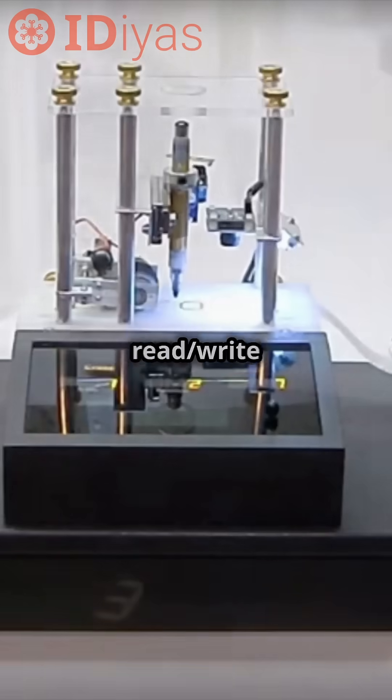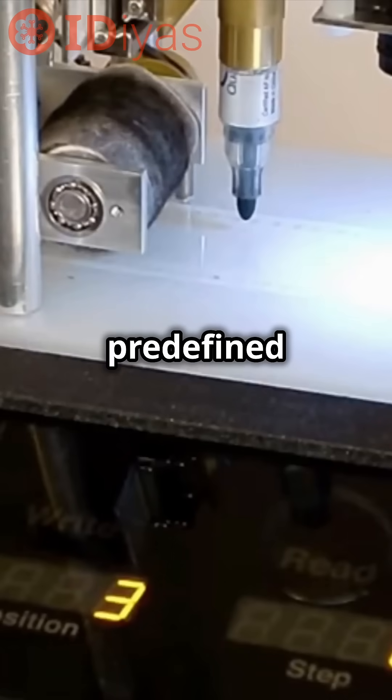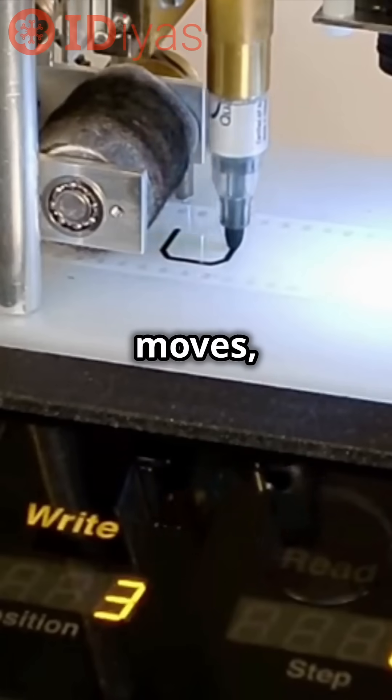It consists of an infinite tape, a read-write head, and a set of predefined rules that determine how the machine moves, reads, and modifies symbols on the tape.